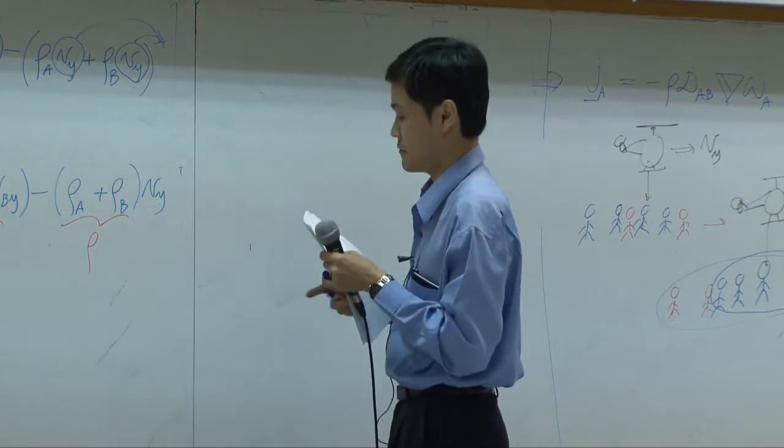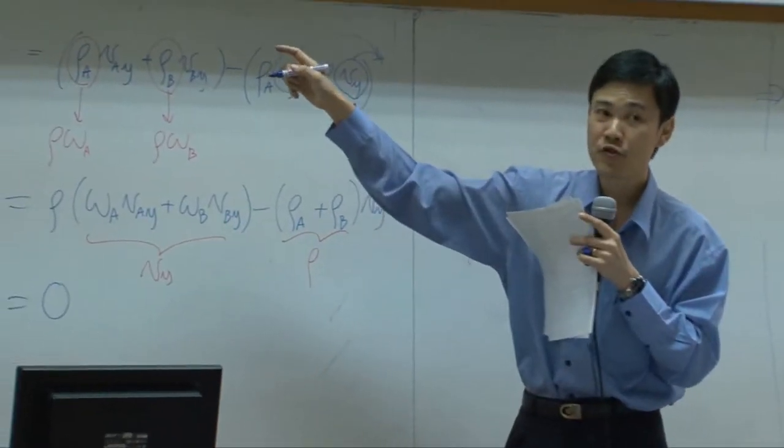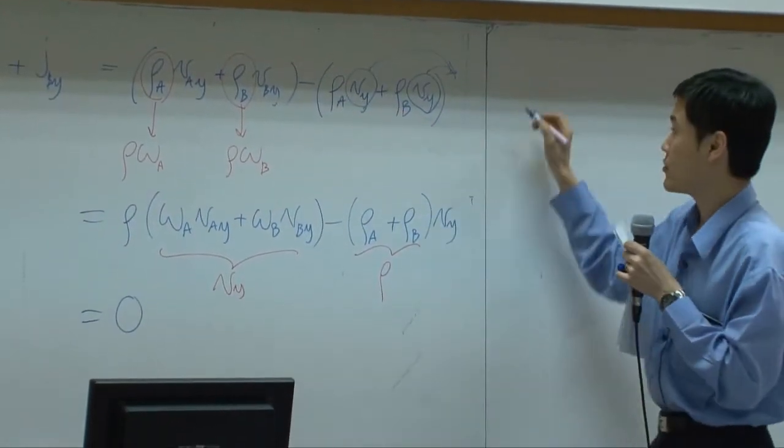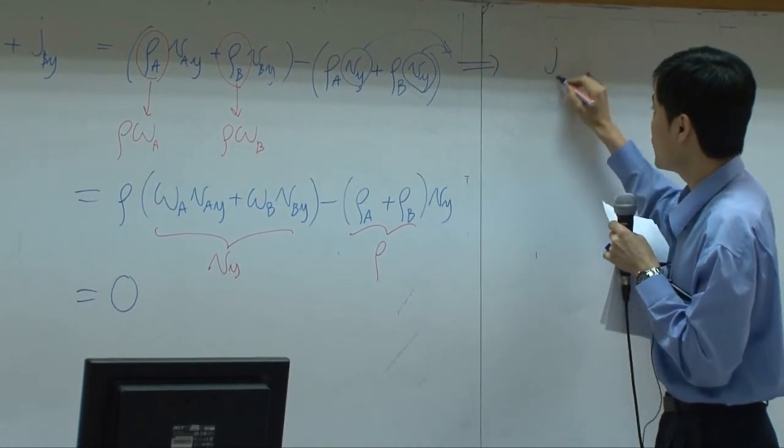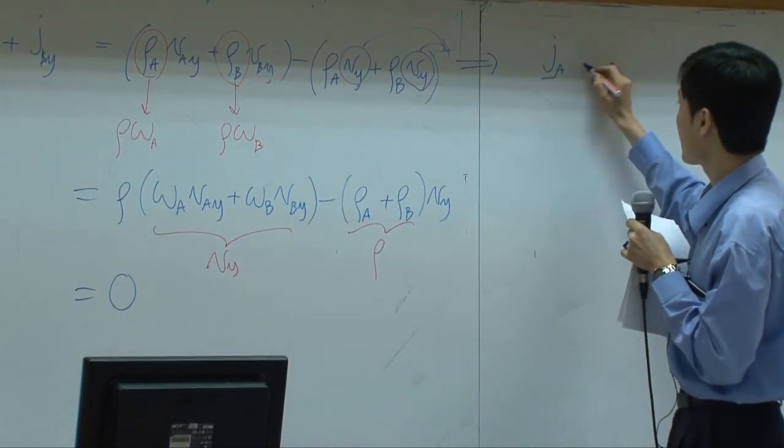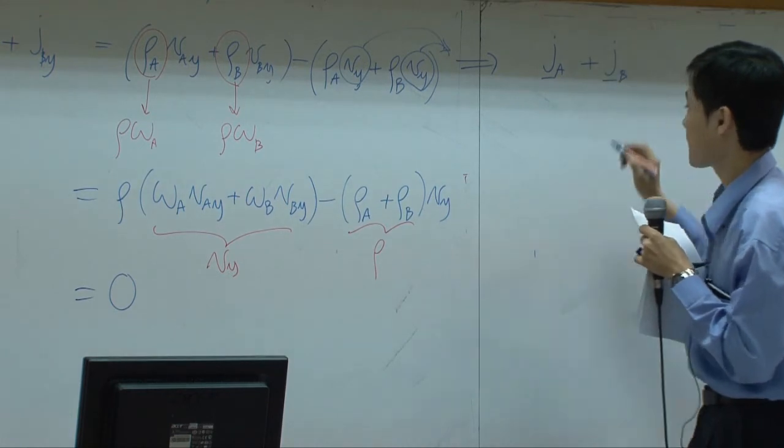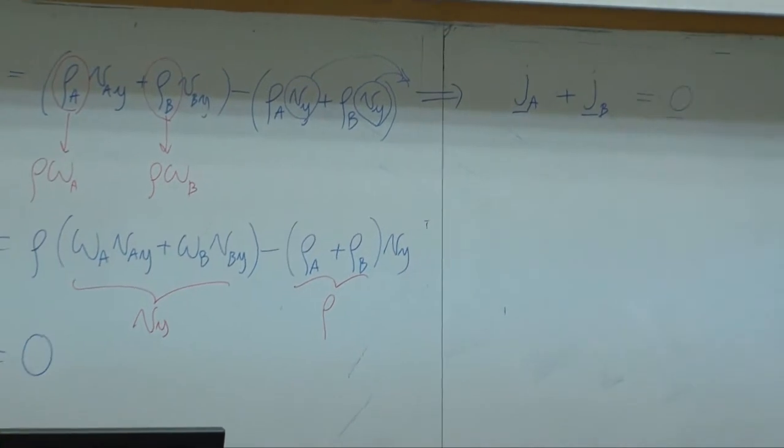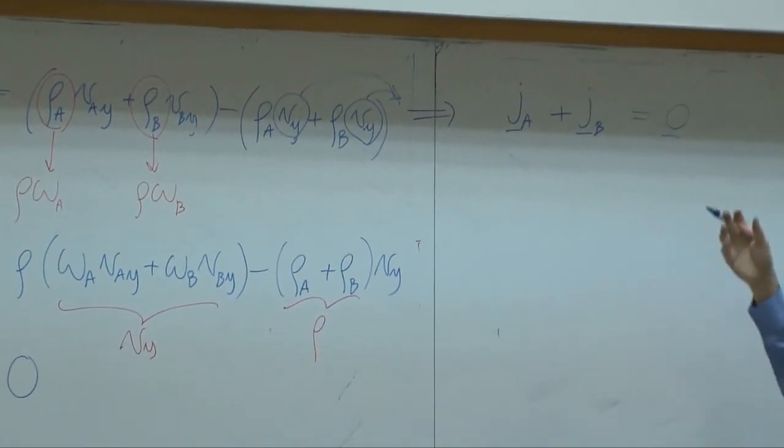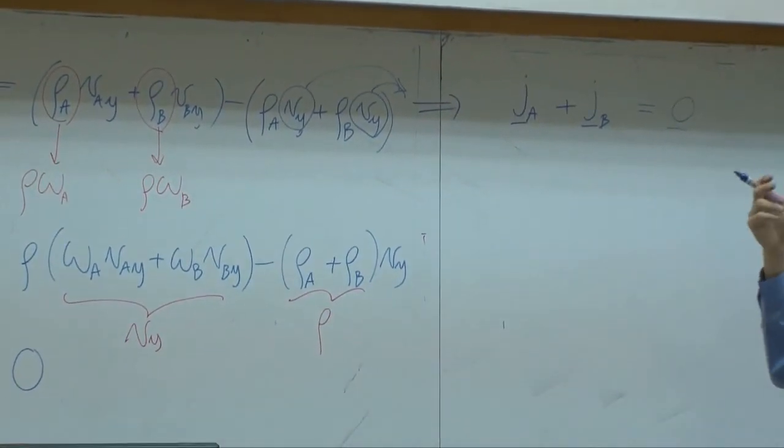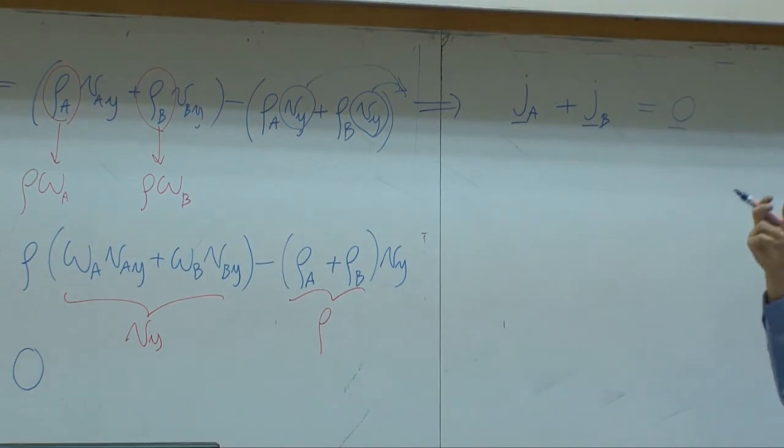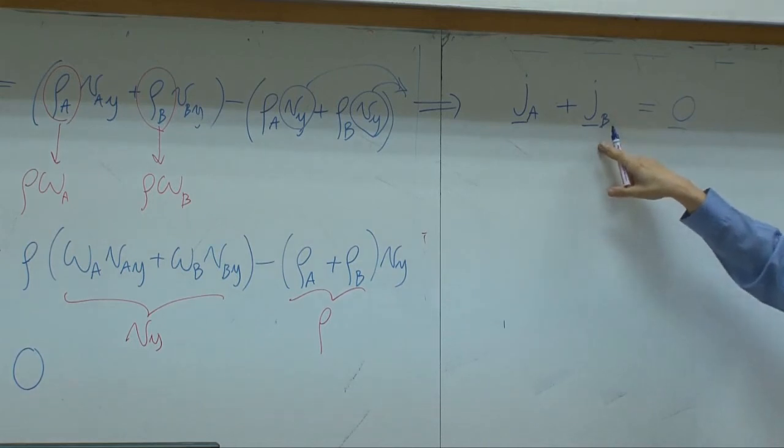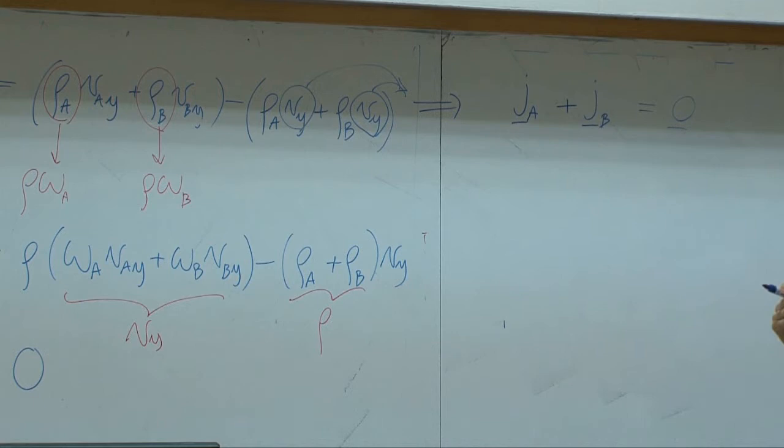From here, if you change from Y direction to any direction, you still get zero. So J A Y J B Y combine get zero. J A X J B X combine you get zero as well. So vector J A and vector J B combine you get zero.